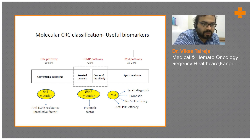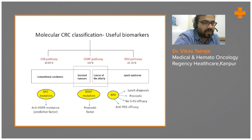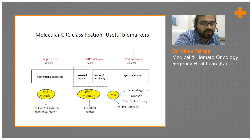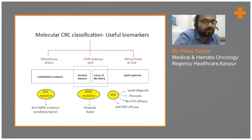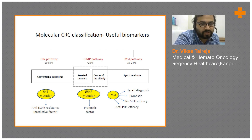Molecular classification of colorectal carcinoma is important because it serves as a key biomarker indicator — whether it is a CIN pathway, CIMP pathway, or MSI pathway — telling us which mutations are harbored inside, such as KRAS, BRAF, or MSI mutations. These mutations carry therapeutic, prognostic, and predictive significance. When KRAS mutation is present, it predicts resistance to anti-EGFR therapy, meaning anti-EGFR agents will not be effective.